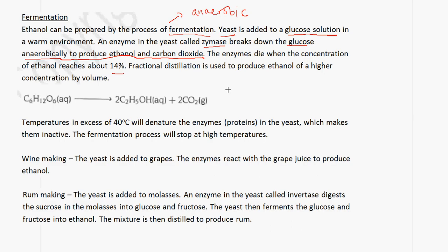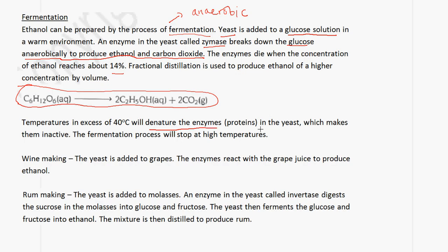The equation for fermentation is: C6H12O6 → 2C2H5OH + 2CO2. The ethanol has a concentration of about 14% by volume. If you want to obtain ethanol of a higher concentration, you need to perform fractional distillation. Temperatures in excess of 40 degrees Celsius will denature the enzymes in the yeast — note the term 'denature', not 'kill' — and fermentation will stop at high temperatures.